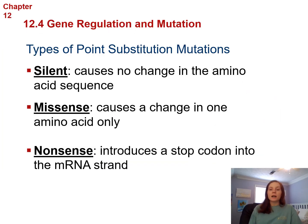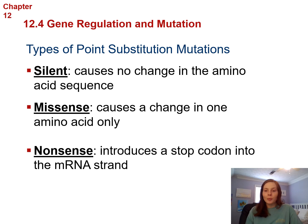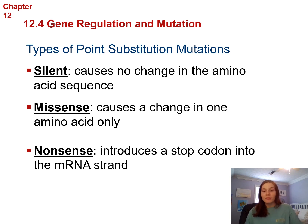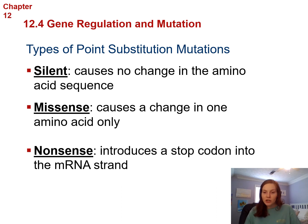The three types of point substitution mutations: First is silent — there's no change in the amino acid. Because multiple codons can code for the same amino acid, if the mutation still codes for the same amino acid, it's silent. Nothing changes — the amino acid sequence stays the same, the protein folds properly, and it most likely won't be noticed.